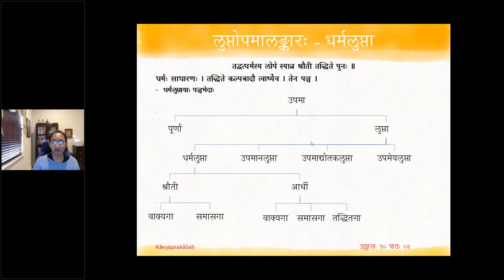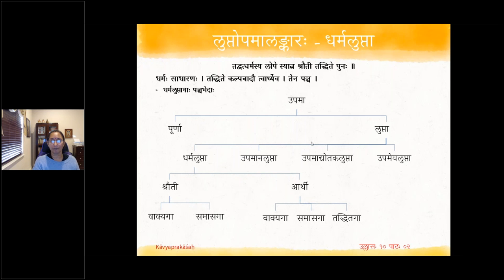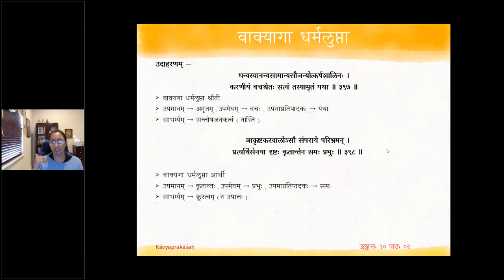Dharma Lupta is divided into Shrauthi and Arthi. In Shrauthi, you don't have Tadhitam; the rest are all present. Shrauthi is again divided into Vakyaga and Samasaka. Arthi has Vakyaga, Samasaka, and Tadhitaka. So there are five types. When Dharma is absent and the Kalpap Pratyam is used — as in Chandra Kalpaha, meaning Chandraiva Bhasate — that is Arthi Upama. Dharma Lupta has five varieties.